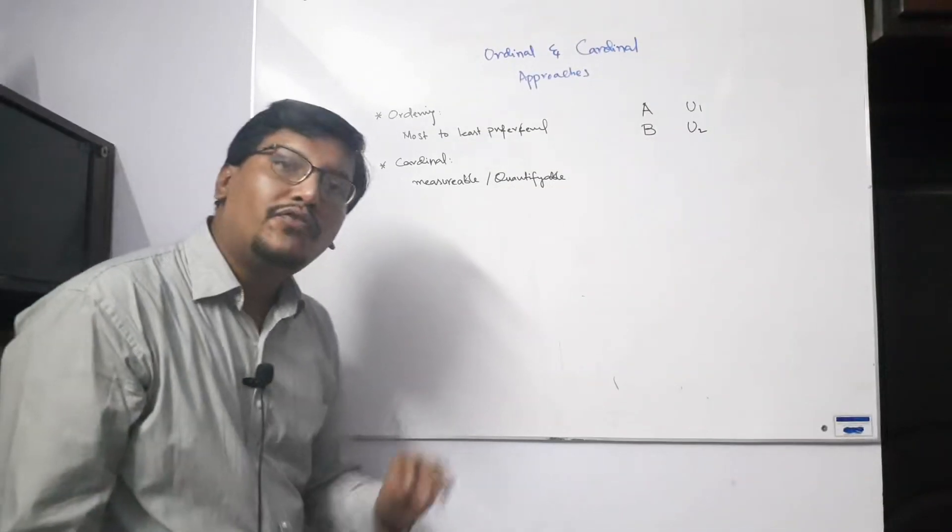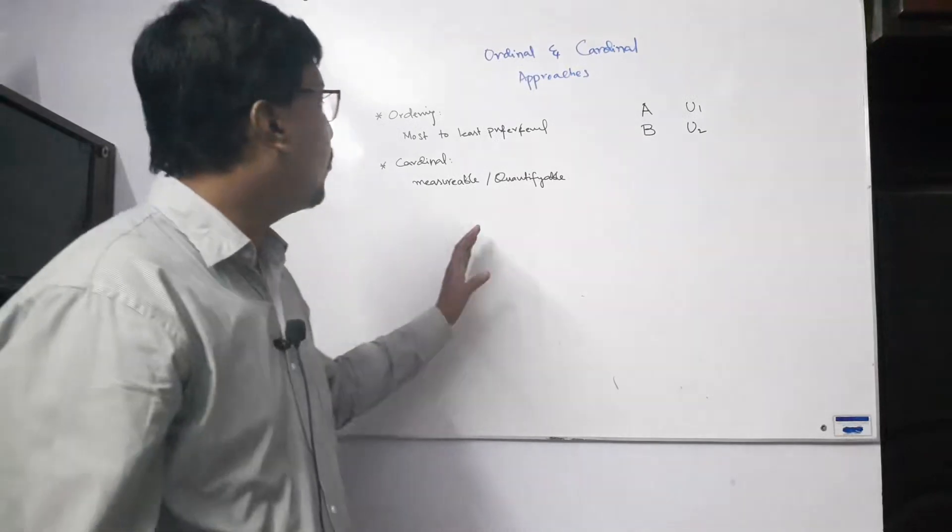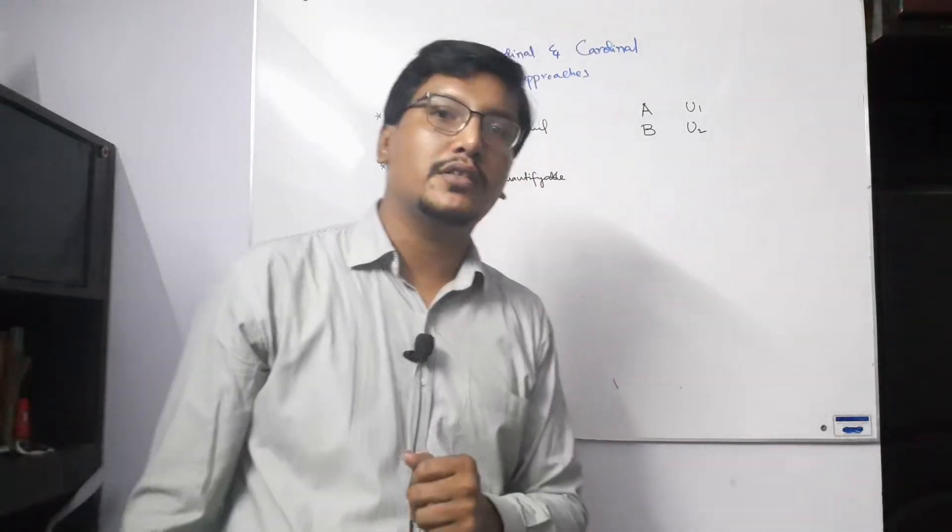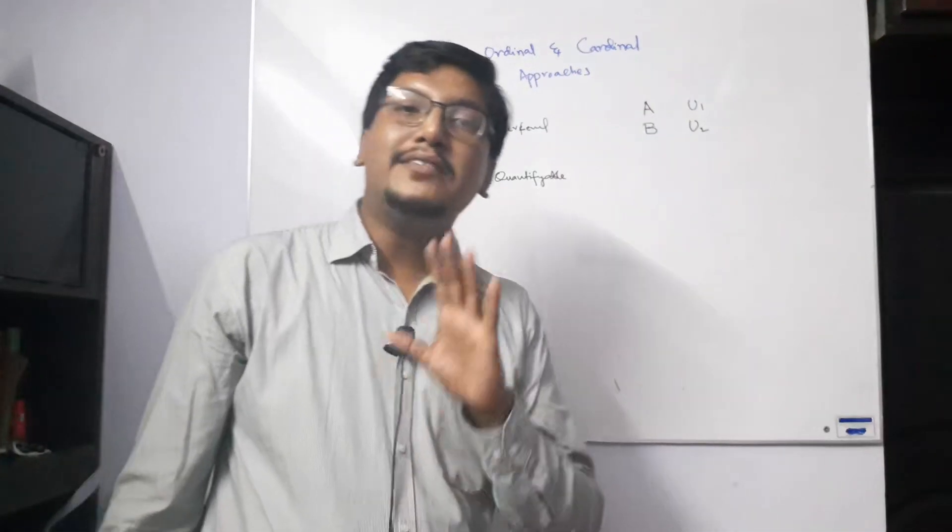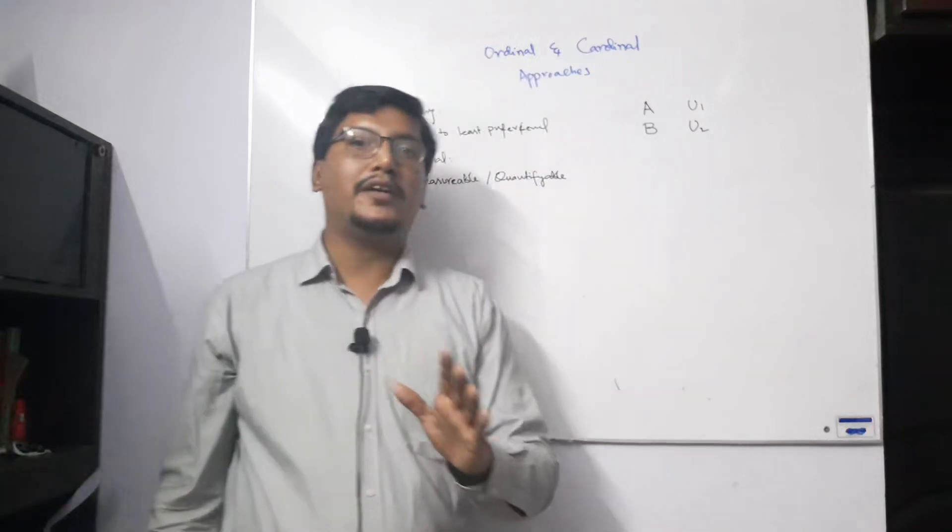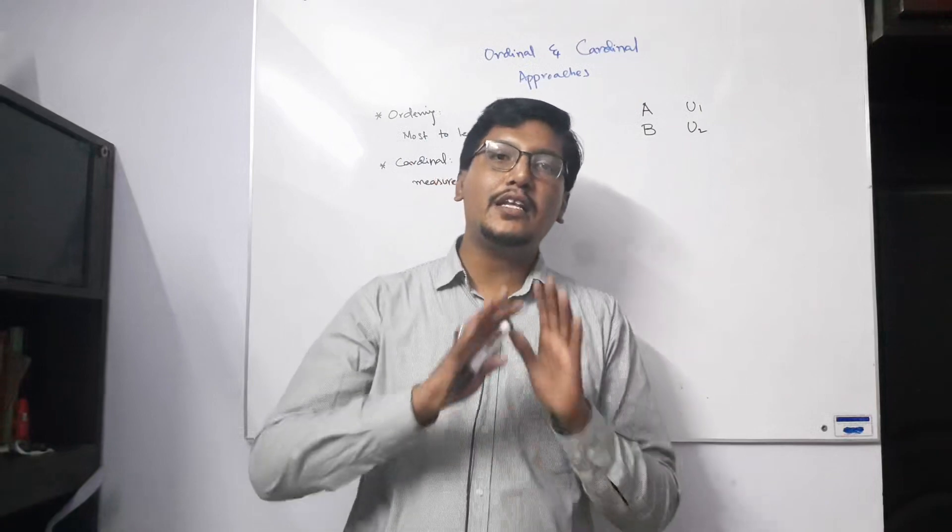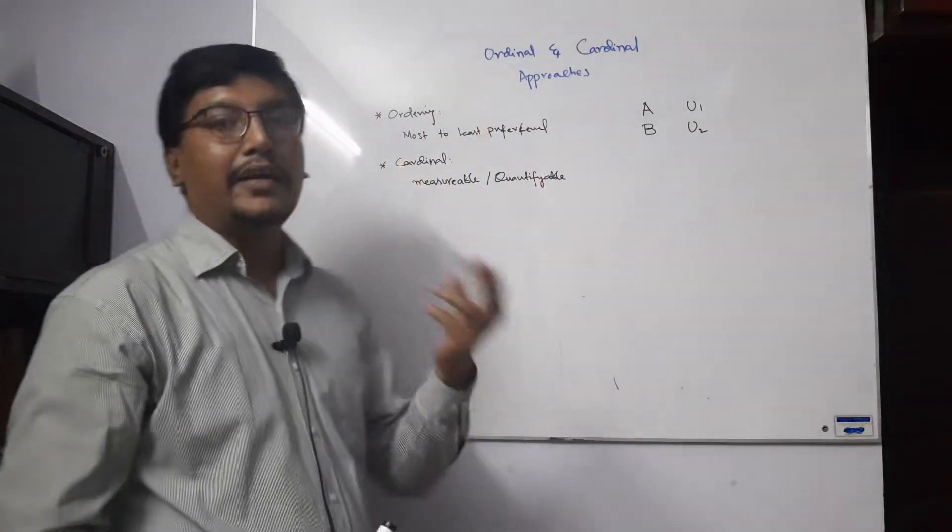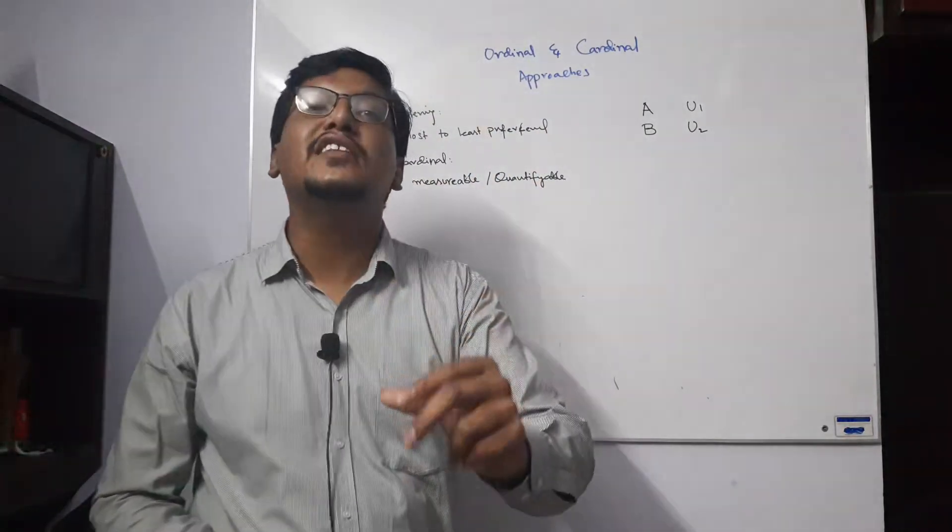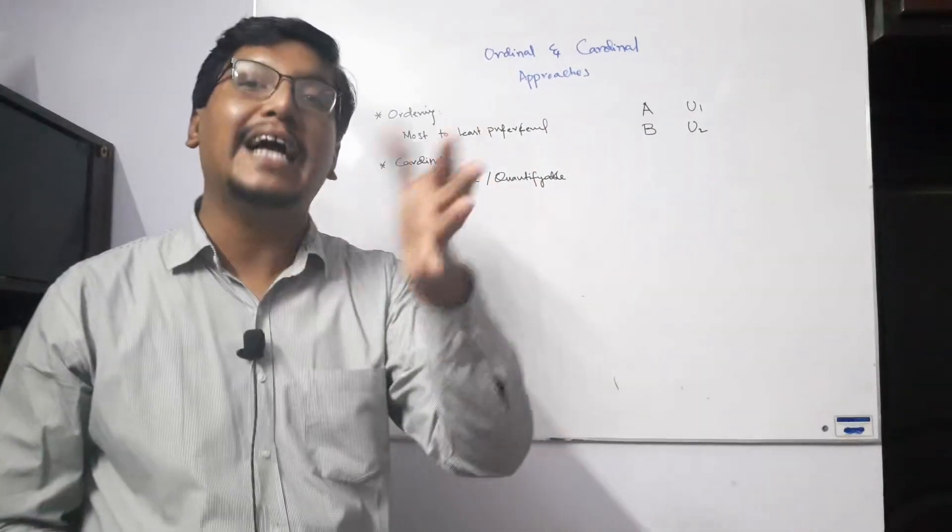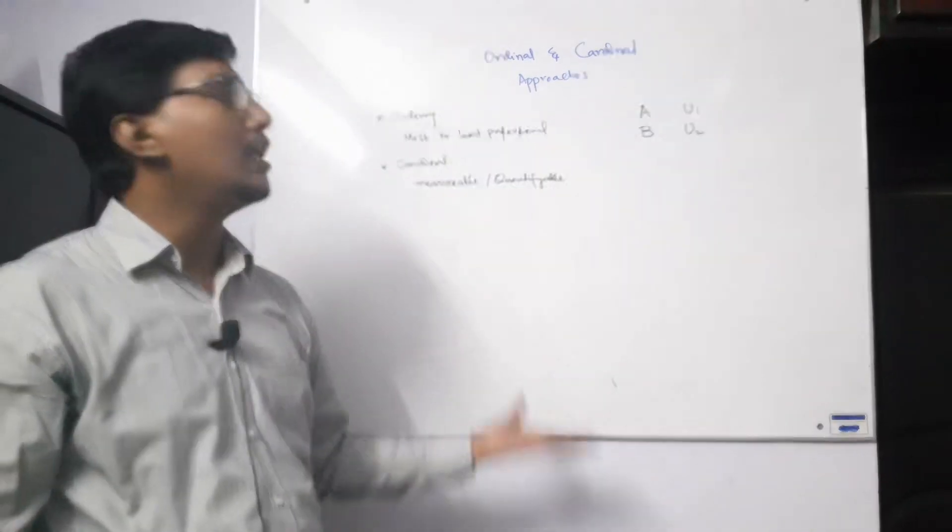When we discuss the cardinal approach, the first question we raise is: what is the measurement unit of utility? So it is unimportant from the economist's point of view. Economists say that irrespective of the measurement unit, we will know how much utility we have found and we will know the number of commodities.